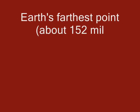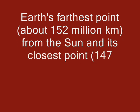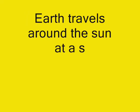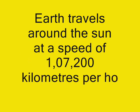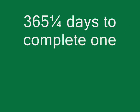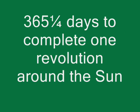Earth's farthest point is about 152,000,000 kilometers from the Sun, and its closest point is 147,000,000 kilometers. Earth travels around the Sun at a speed of 1,07,200 kilometers per hour, taking 365 and a quarter days to complete one revolution around the Sun.